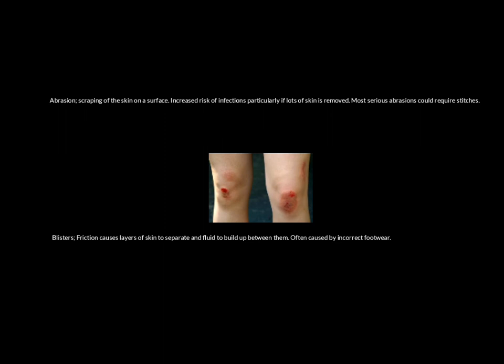Two of the most common soft tissue acute injuries are abrasions and blisters. An abrasion is effectively a graze — scraping of the skin on a surface. Anyone who's fallen and landed on their knees or elbows has no doubt had an abrasion. Because the skin is open and exposed, there's a risk of infection. A really serious abrasion could require stitches, but they have to be quite severe to warrant that.